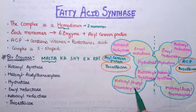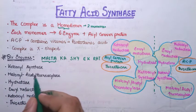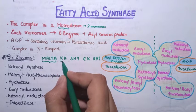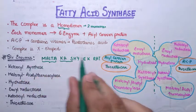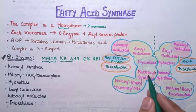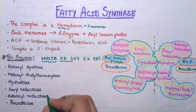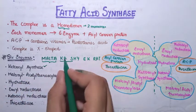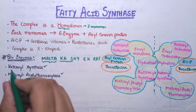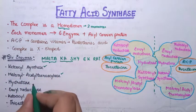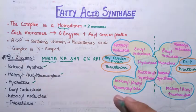Let's decode the mnemonic 'malta ka shy akrat.' Malta stands for malonyl acetyl transacylase — that is the first enzyme. KAS stands for ketoacyl synthase — that is the next enzyme. HY stands for hydratase. So with 'malta kas hy,' you have completed the first three enzymes: malonyl acetyl transacylase, ketoacyl synthase, and hydratase.